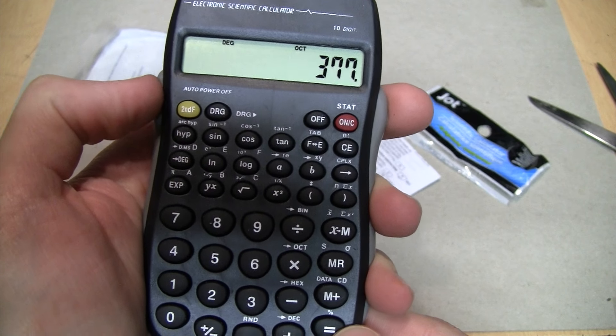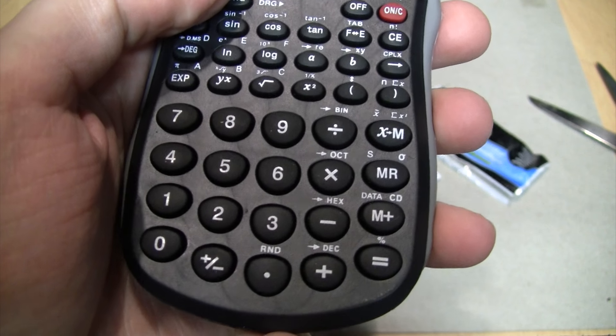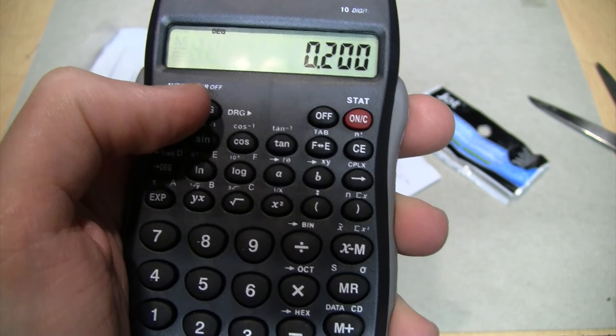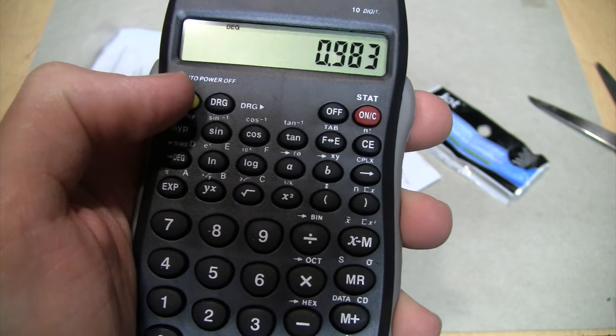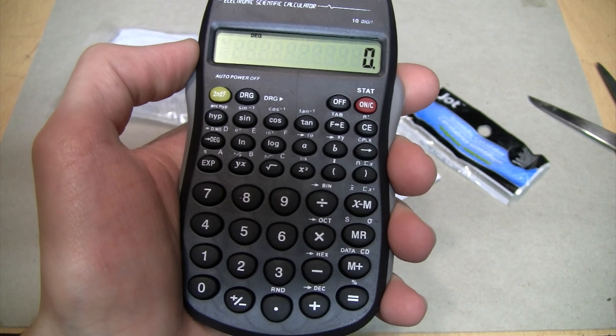And it does binary too. So 255 decimal converted to binary is 11111111, or in hex as we saw earlier FF, or in octal 377.